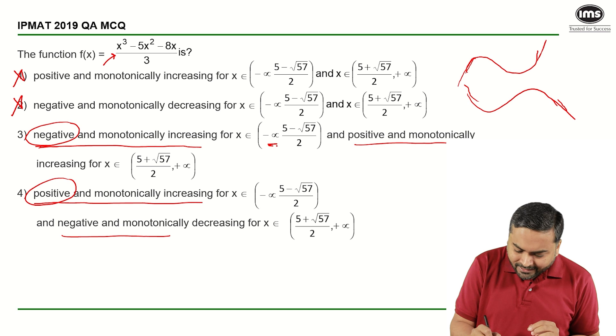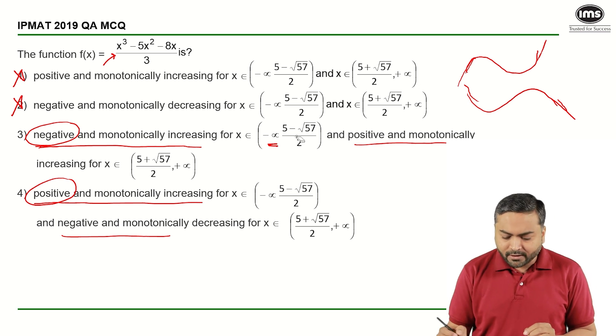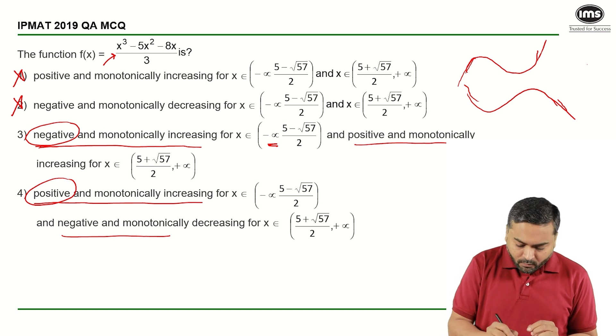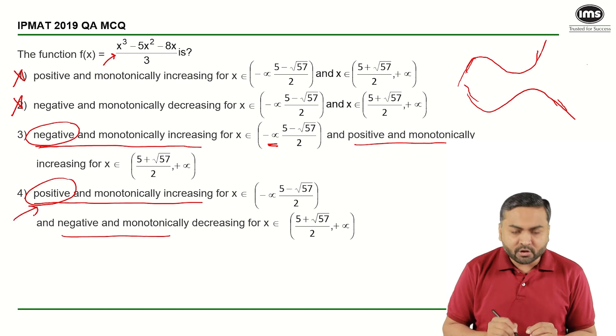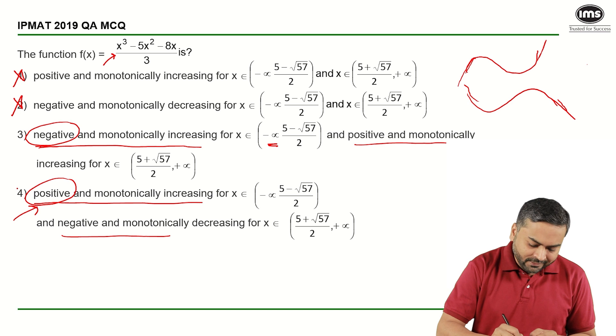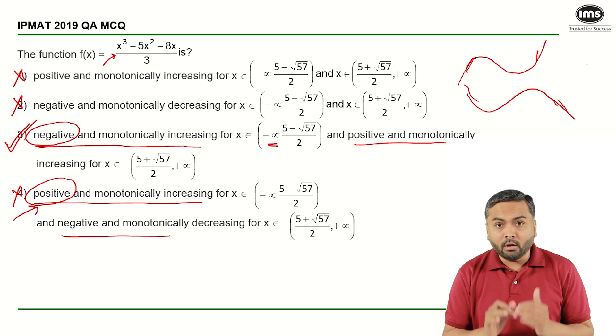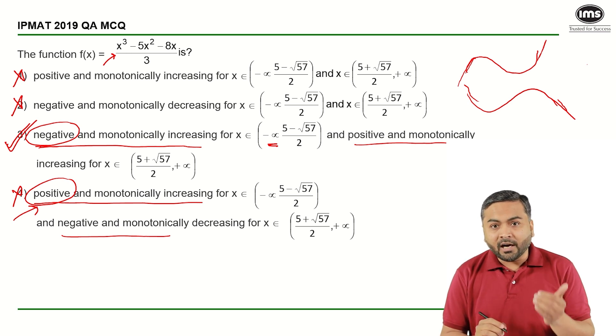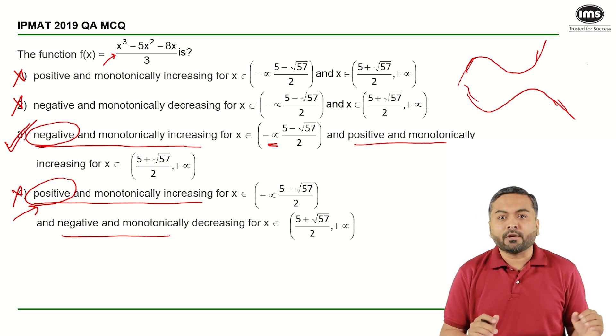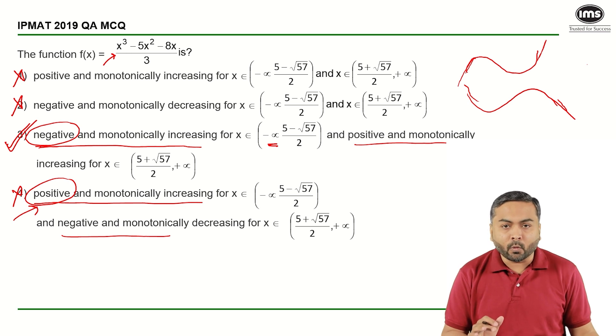If you look at this as minus infinity here, my number will be negative and it won't be positive as mentioned here, and hence I can eliminate this option and get my answer as option 3. So this is how we could have solved this particular question without writing any equation, without solving any equation.